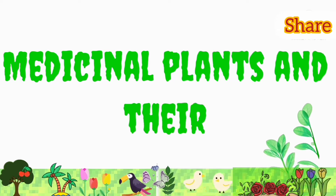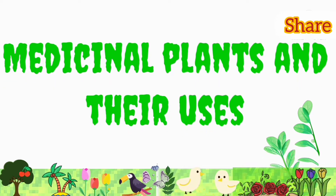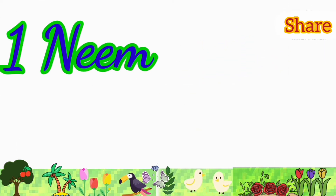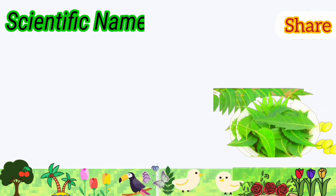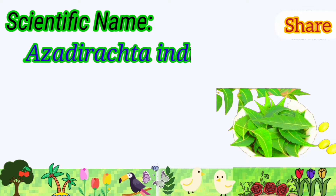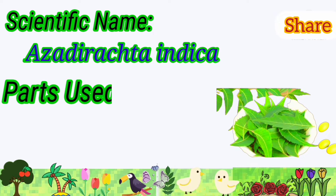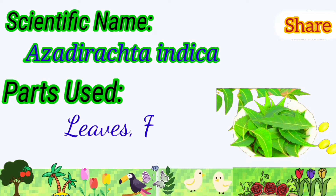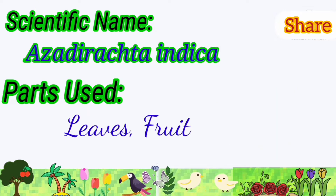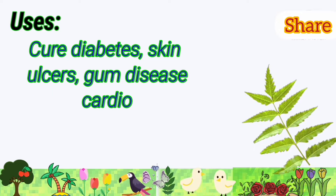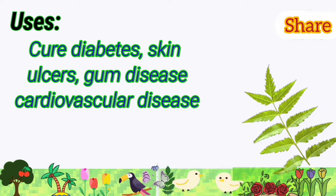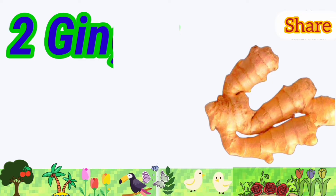Assalamu alaikum. Today's video is about medicinal plants and their uses. Neem: its scientific name is Azadirachta indica. Parts used are leaves and fruit. It is used to cure diabetes, skin ulcers, gum disease, and cardiovascular disease.